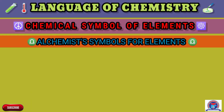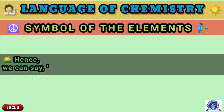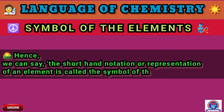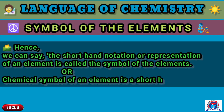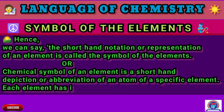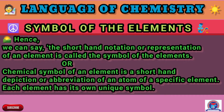Hence we can say the shorthand notation or representation of an element is called the symbol of the element. A chemical symbol of an element is a shorthand abbreviation of an atom of a specific element. Each element has its own unique symbol.